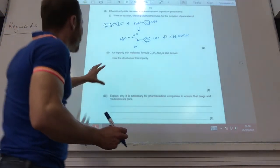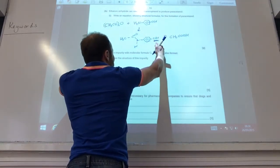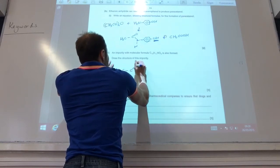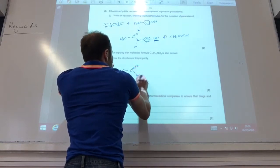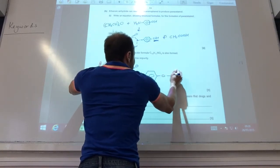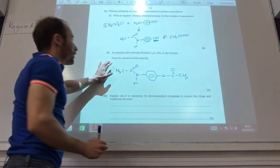It then tells you this impurity is formed. If you check out this boy, he's got a phenol group there. And as we just looked at in the previous question, a phenol group can react with ethanoanhydride to form the ester like so.